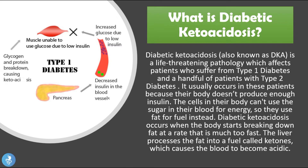Another problem with increasing amounts of ketones in the blood is acidosis, because these compounds have a low pH. The more ketones that are created, the more acidic the blood becomes. Eventually these patients will go into a severe form of acidosis and may even die because of this acidic pH. That is why diabetic ketoacidosis is commonly referred to as a medical emergency or life-threatening pathology.